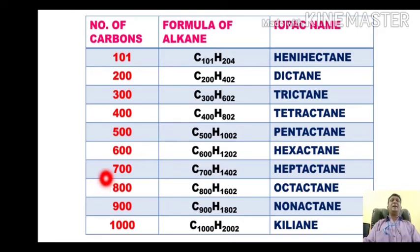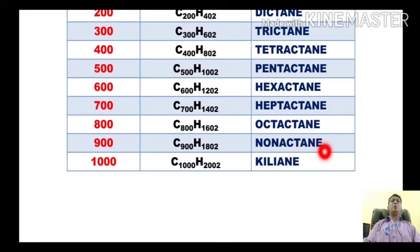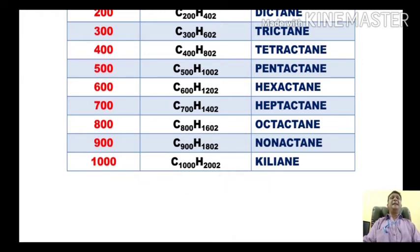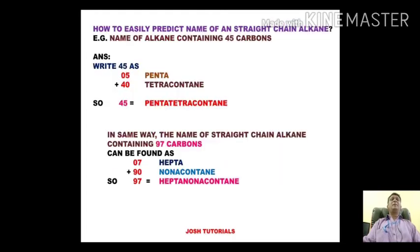For the alkane with 700 carbons the name is heptactane; for 800 carbons it is octactane. The alkane with 1000 carbons in a straight chain is called kiliane — 'kili-' is taken from the word 'kilo', which stands for thousand. So for a thousand we use the prefix 'kili-' followed by the suffix '-ane', giving kiliane.